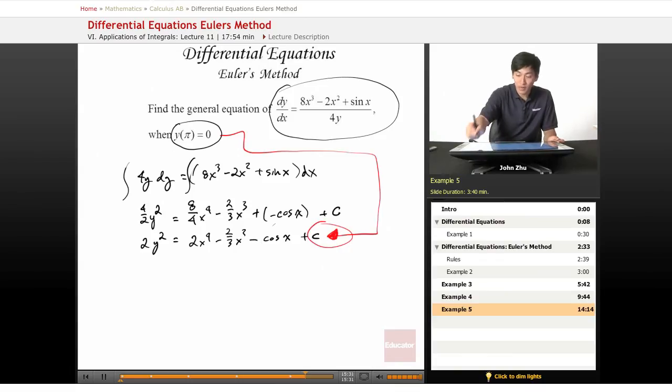Let's just go ahead and plug it in. 2 times 0 squared equals 2 times pi to the 4th minus 2 thirds pi squared minus cosine of pi. And of course, this just equals 0.